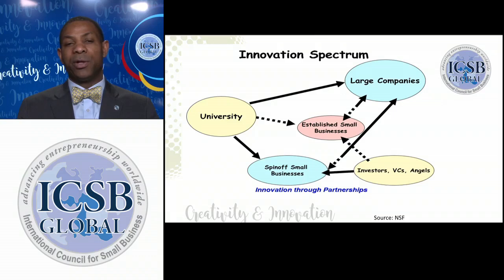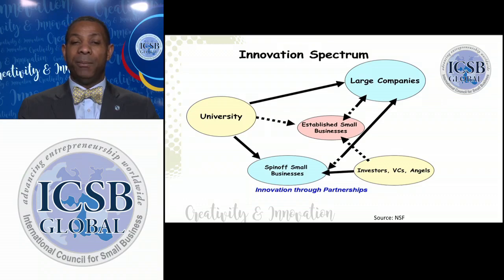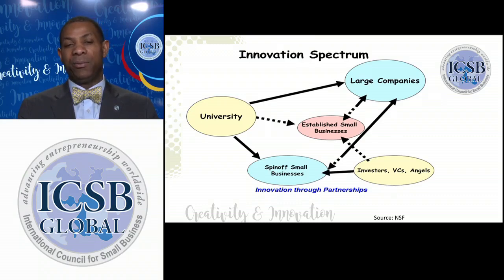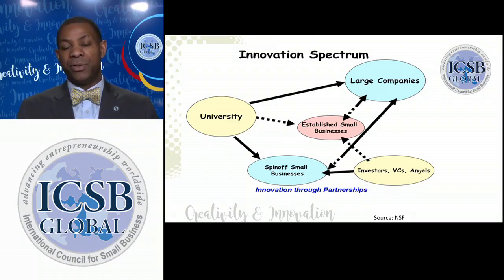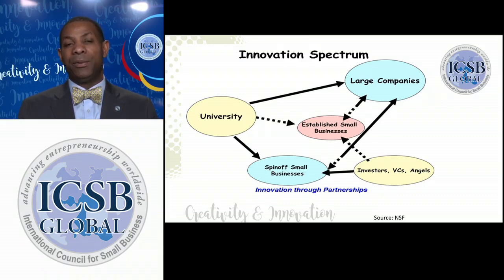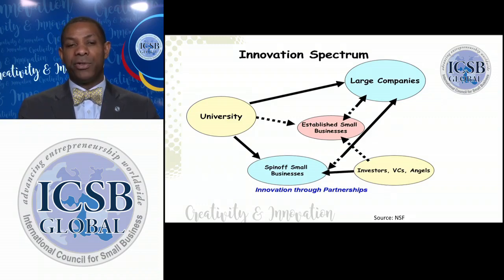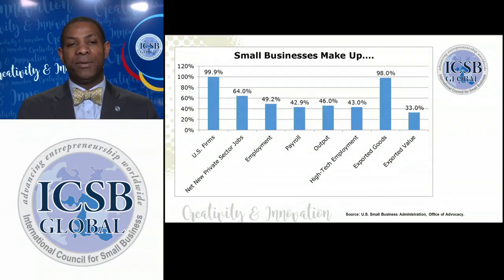In each one of these circles, you see that there are different inputs going in. Sometimes a small business may work with a large company, or an established small business may work with a large company. That small business could also leverage, as outlined in the previous slide, the investors — VCs and angels — who are going to help bring this technology or service right into the marketplace. When we think of the spectrum of innovation, we think of all the partnerships involved that make this ecosystem happen.